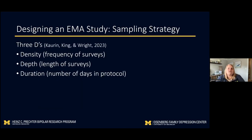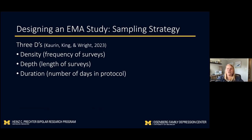Sampling strategy is probably the most important decision-making area. There's a wonderful paper by one of Aiden Wright's graduate students introducing the concept of the '3Ds': density, depth, and duration. Density is the frequency of surveys — how often you're sending them on a day-to-day basis. Depth is the length of the survey — how many items you're including. Duration is the number of days in the protocol.